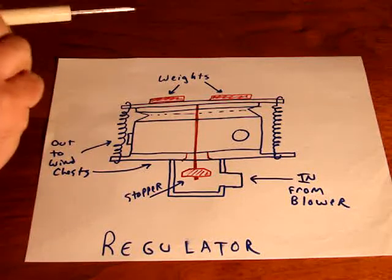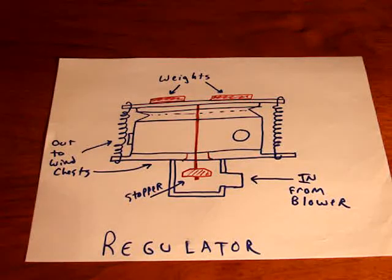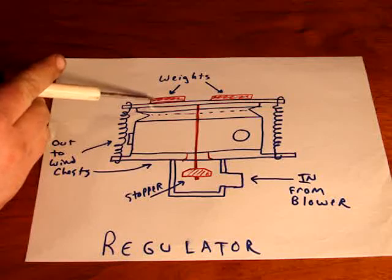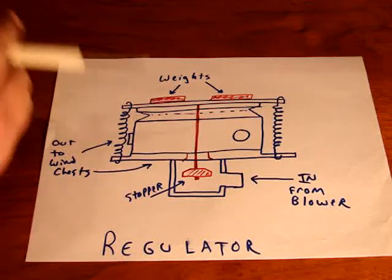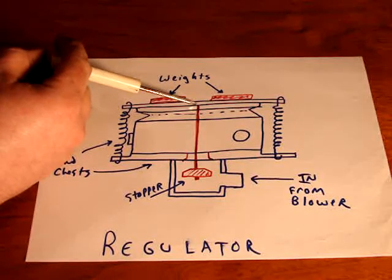There are also weights on here which are how you adjust the wind pressure by how much weight or how little weight is added to the top of this regulator. Now connected to the top is a long rod that goes down to a wooden stopper type deal.